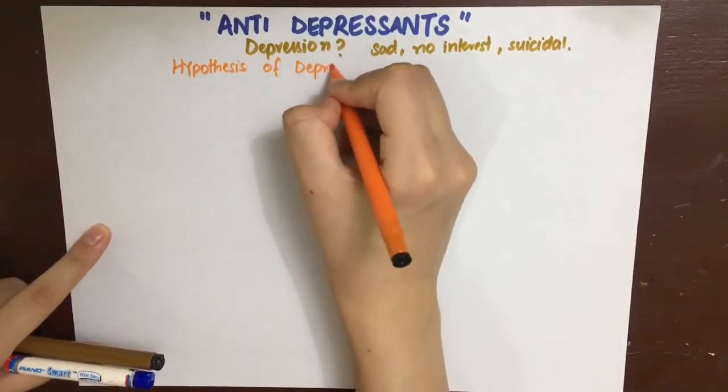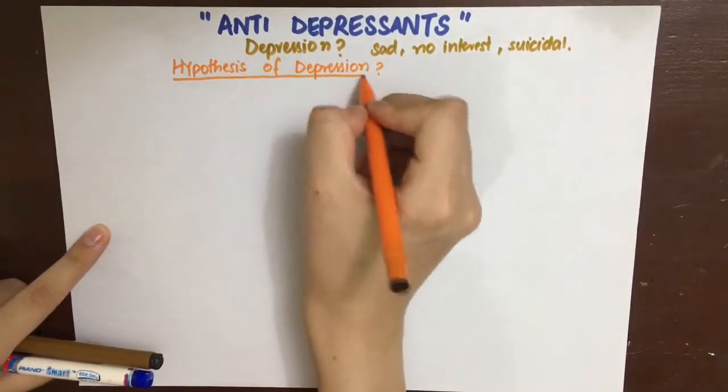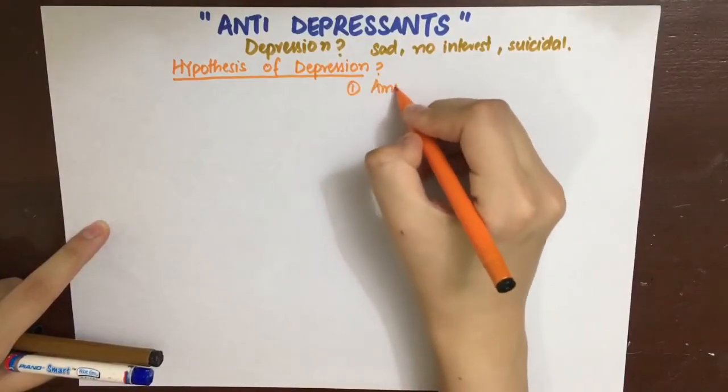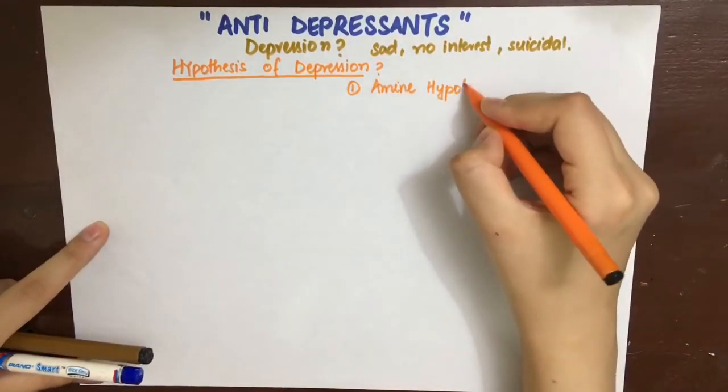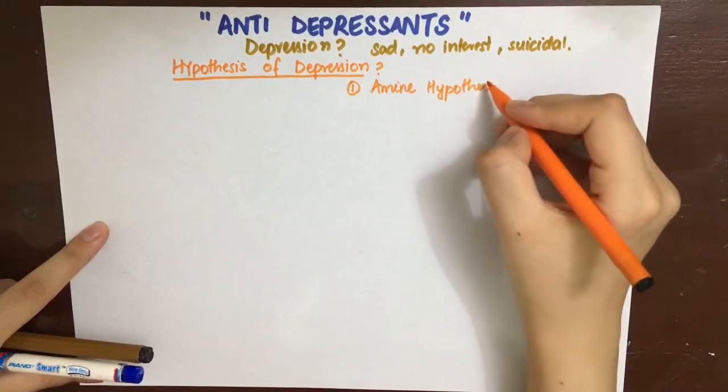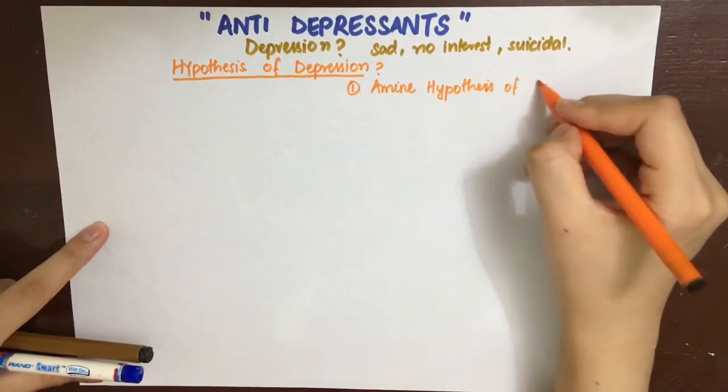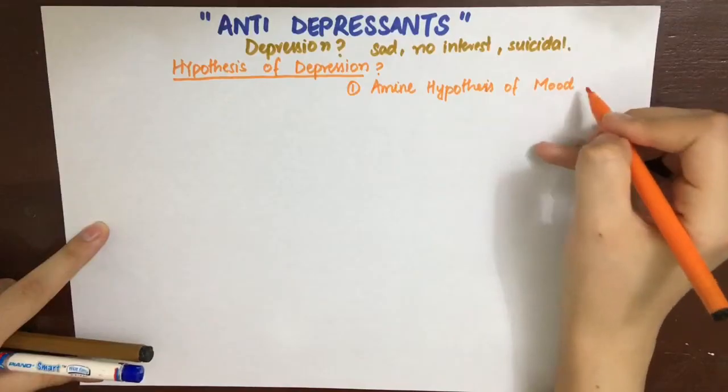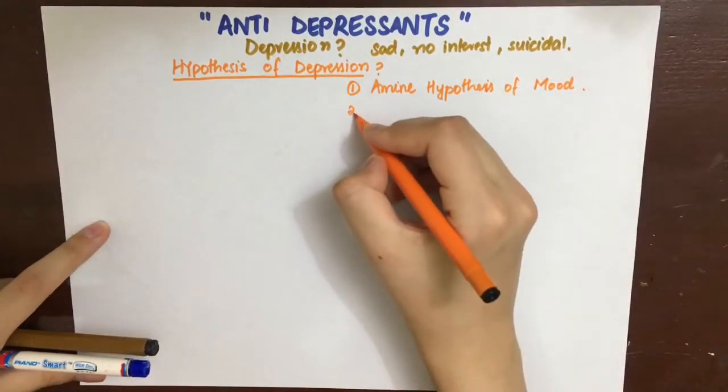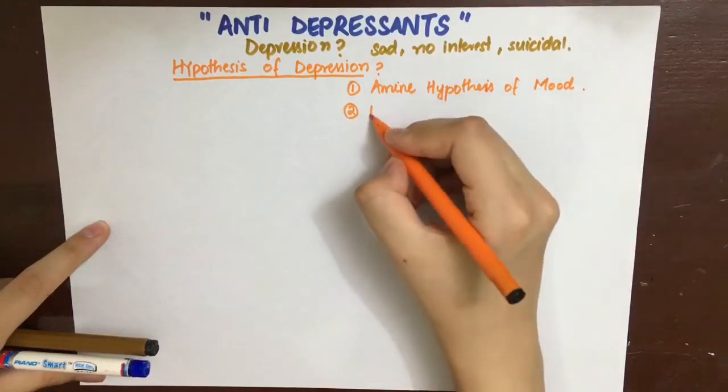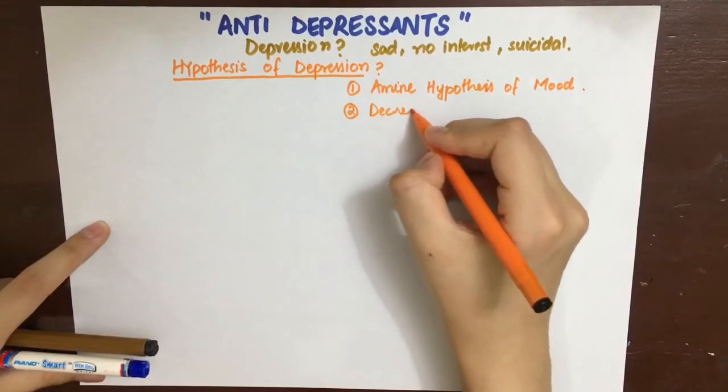In order to understand the cause of depression, different theories or hypotheses have been put forward. First is the amine hypothesis of depression put forward in 1960. It actually revolves around the fact that decrease in the levels or functions of monoamines such as serotonin, norepinephrine, dopamine, etc. in cortical and limbic systems of the brain cause depression.